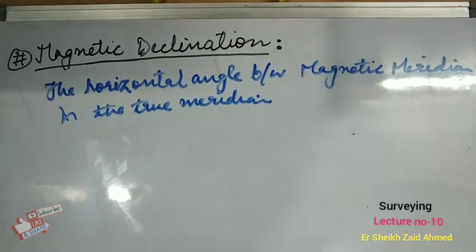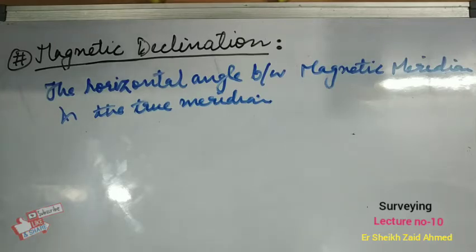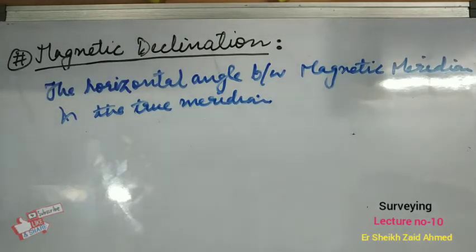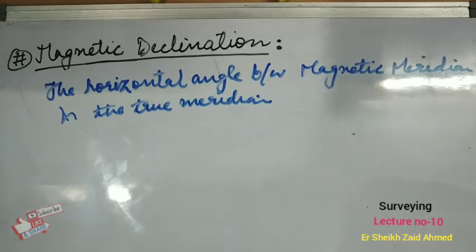If the north end of the magnetic needle is to the east of the true meridian, then the declination is said to be eastern or positive. If the north end of the needle is towards the west of the true meridian, it is said to be western or negative declination. Magnetic declination varies from time to time and from place to place. To find it, the true meridian is established from astronomical observation and the magnetic meridian from observing a compass.